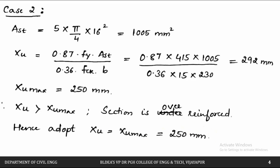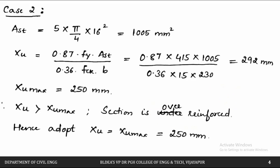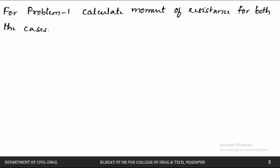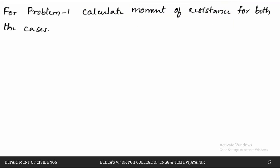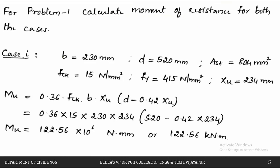So in the question we calculated the depth of the neutral axis and specified whether the beam is over-reinforced or under-reinforced. The next part asks us to calculate the moment of resistance — that is, how much moment the beam can carry — for both cases.